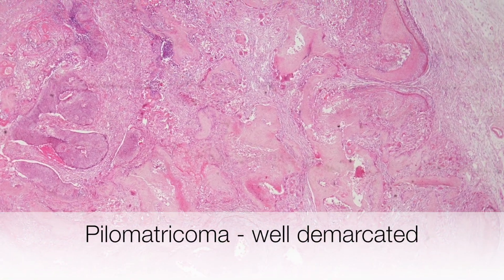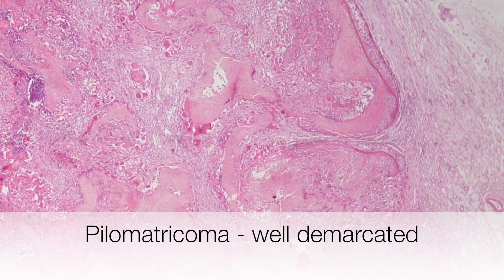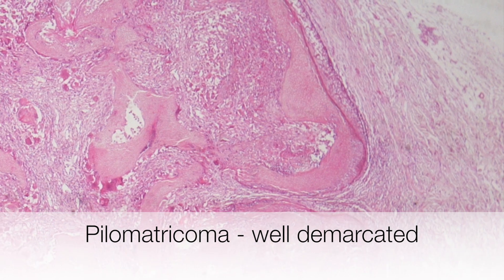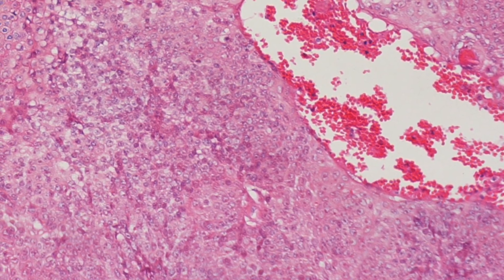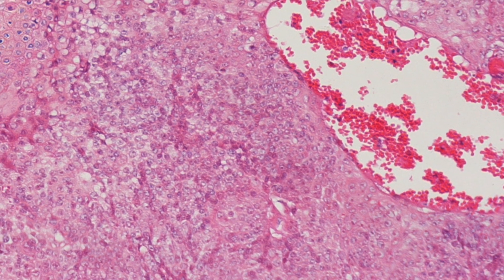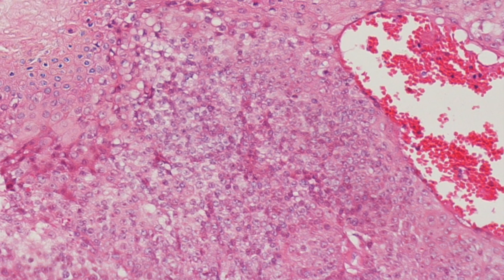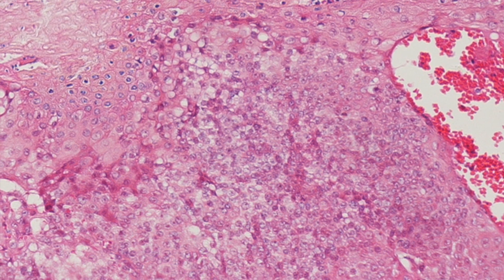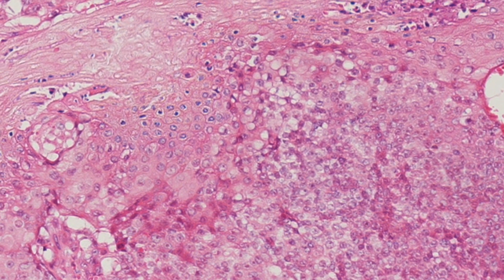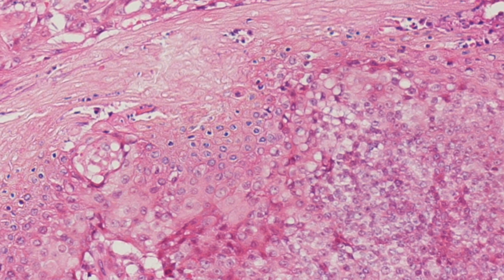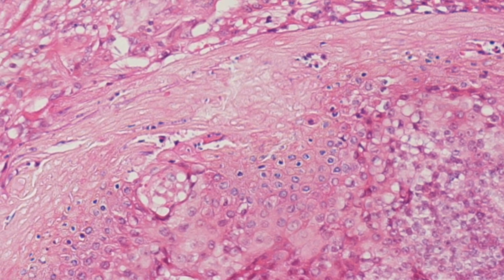On low power, you can appreciate that the border of the pilometrichoma is well demarcated as we move into the connective tissue at the right side of the picture. These blue staining cells are basaloid cells, and as we move along towards the left, you can see that the basaloid cells start to lose their nuclei. Eventually, the cells are completely devoid of nuclei and these are ghost cells or shadow cells.